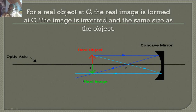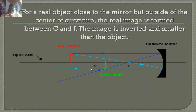For a real object directly on C, a real image forms at C — same size but inverted. For a real object outside the center of curvature, to the left of C, a real image forms between the center of curvature and the focal point — the image is inverted and smaller.